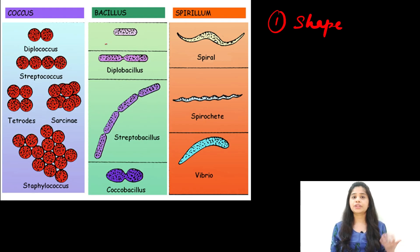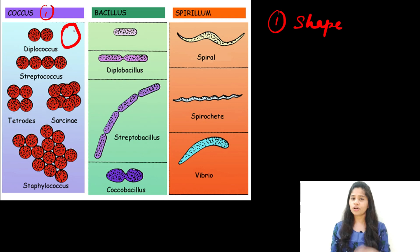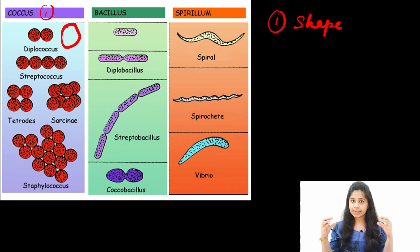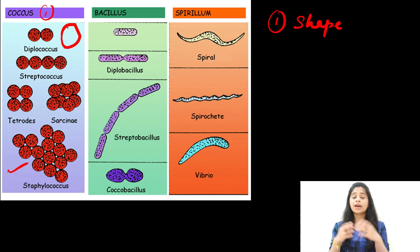Let's classify bacteria based on shape. The first type is the cocci — spherical or round bacteria. Diplococci are two spheres together. Streptococci are a linear arrangement of cocci cells, and staphylococci are cocci cells that come together in a bunch or irregular arrangement.